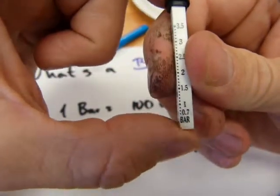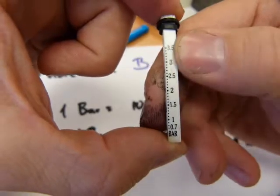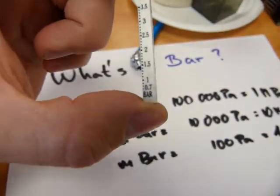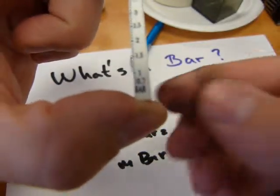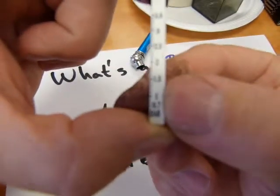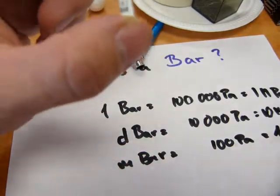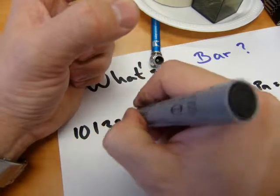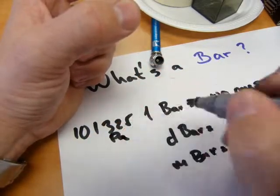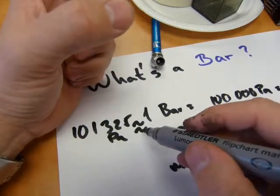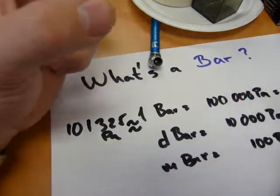To visualize a little bit how big is one bar of pressure, approximately the atmospheric pressure of air at sea level is one bar, because it is 101,325 Pascals and that means approximately equal to.